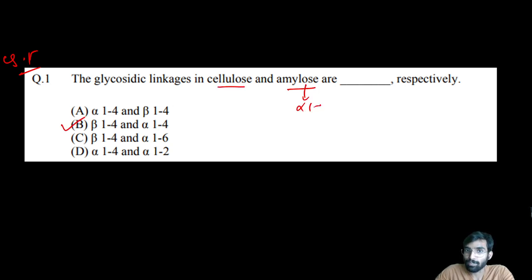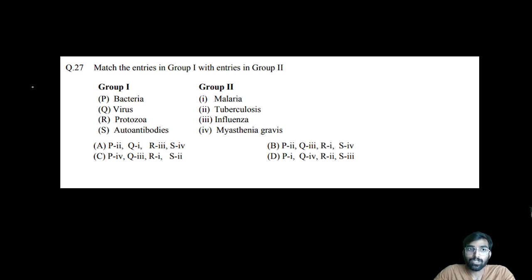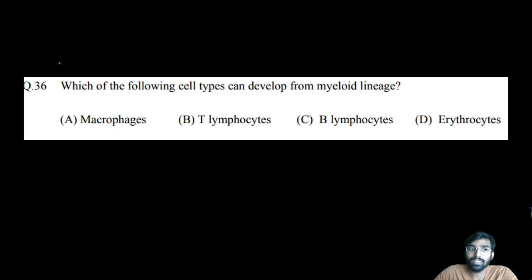Question number six: Match the entries in group one with entries in group two - bacteria, virus, protozoa, and autoantibodies with malaria, tuberculosis, influenza, and myasthenia gravis. Bacteria is Mycobacterium tuberculosis, virus is influenza we all know, protozoa is malaria, and autoantibodies is myasthenia gravis. That means S4, R1, Q3, and P2. The correct option is B.